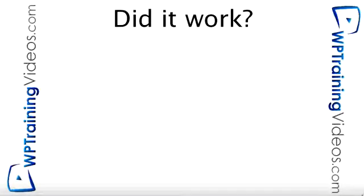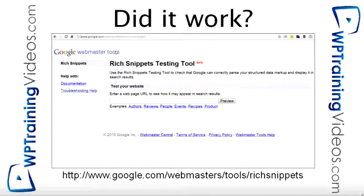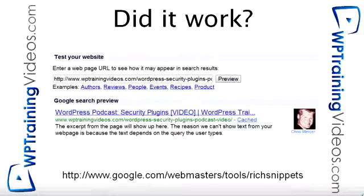Now, let's say you have everything set up correctly — how do you know it's working? There's a nice little tool you can use called the Rich Snippets Testing Tool, and you can find it right there. There is no login required. Just type it in, take the URL of the page you want to check, and click on Preview. As an example, we recently created a WordPress podcast and released our first one — we put this in a blog post. We took the URL and clicked on Preview, and there you can see the link for our WordPress podcast on security plugins, and next to it is my profile picture. This proves that I've set it up correctly and that Google can see everything it needs to in order to put my profile picture there.